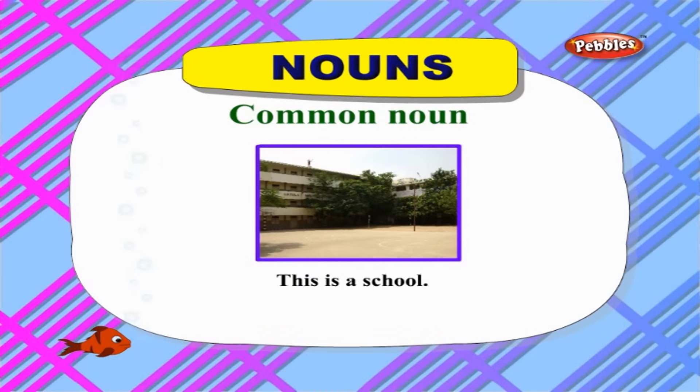There are many kinds of nouns. The kinds of nouns we are going to see now are common noun, proper noun, and collective noun. Common nouns are the names that are used in general or in common for any person, place, or thing. Let us see some examples: 'This is a school' — here, school is a common noun.